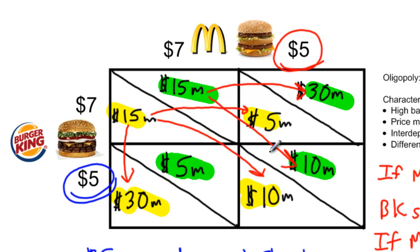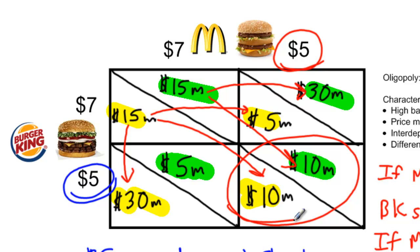What does this mean for the likely outcome of the game? The outcome will be that the price of hamburgers will always equal five dollars and the level of economic profits both firms enjoy will only be ten million dollars. Without the ability to collude or cooperate with one another, McDonald's and Burger King will always end up charging a lower price for their products and earn a lower level of economic profit than would be achievable if they both charged a higher price. But this is the nature of oligopoly markets.